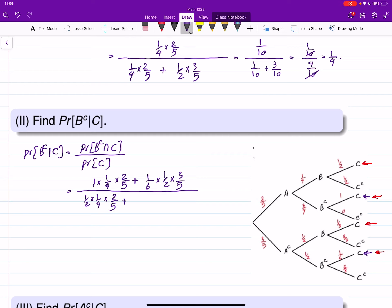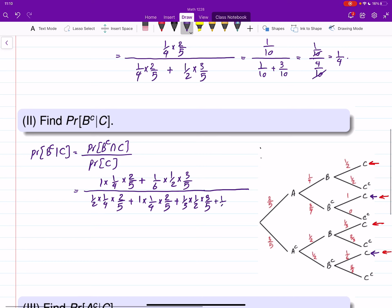The second one gives me, as we calculated above, this number. The third one is 1 third times, this should be added. You find probability of each path and add them. So 1 third, 1 half, and 3 over 5. And the last path gives me 1 over 6, 1 over 2, and 3 over 5.